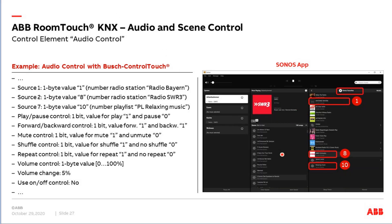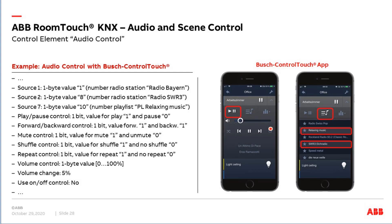Here you can see a screenshot of my Sonos app. I am in my Sonos favorites and can see the list of all radio stations and playlists. Number one is Radio Bavaria, number eight is SWR3, and the relaxing music playlist is number ten. These values — 1, 8, and 10 — are what I send via the source buttons when pressed. In the Bush Control app screenshot, you can see on the left side the page for playing, stopping, changing volume, shuffle mode, backwards, and forwards. On the next page you can select playlists and radio stations — which we also do via the RoomTouch.